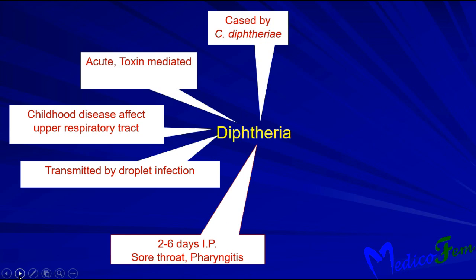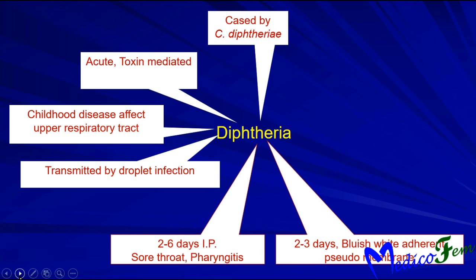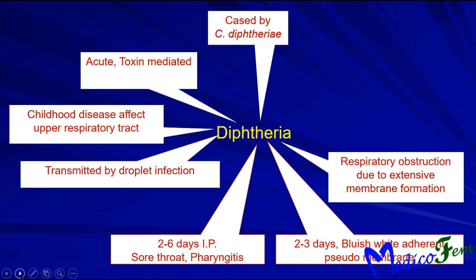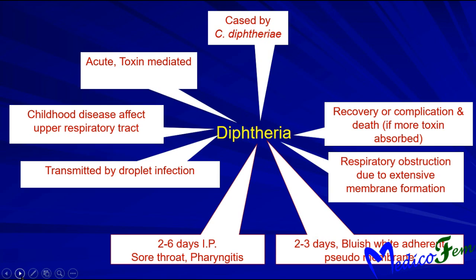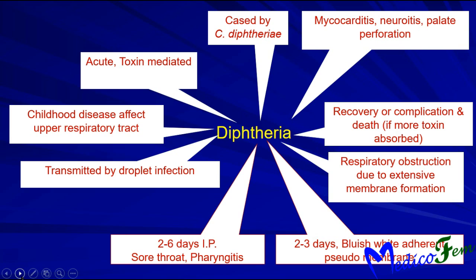The incubation period is two to six days. Main symptoms include sore throat and pharyngitis. After two to three days there is development of a bluish-white adherent pseudomembrane, usually on the posterior wall of the oropharynx. This causes respiratory obstruction due to extensive membrane formation. If untreated, it can lead to complications or death. Complications mainly include myocarditis, neuritis, and palate paralysis.